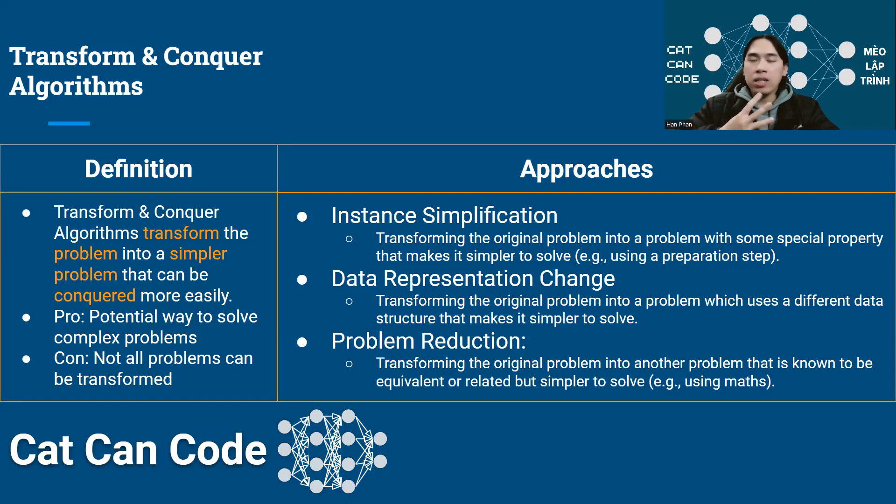The third approach in Transform and Conquer is that we try to reduce the problems using some of the known connections and they can be a link to unknown problems or some mathematical equation that you can employ so that you can reduce your problem into a form that already has a solution. By doing this reduction, you can indirectly solve your problem through solving the reduced problem.